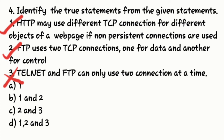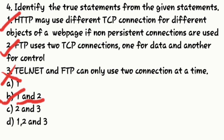Option three: Telnet and FTP can only use two connections at a time — that's wrong. FTP can only use two connections at a time, but combining Telnet and FTP that way is incorrect. So option B, which includes statements one and two, is correct.